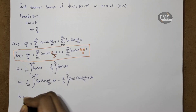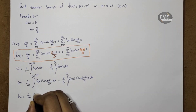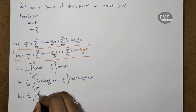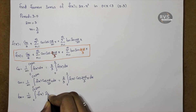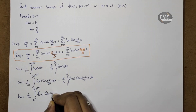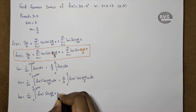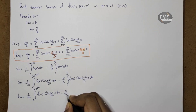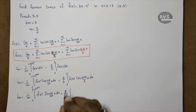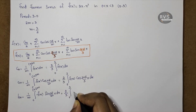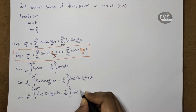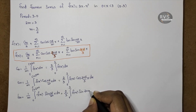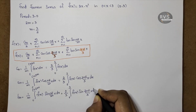The formula for bn is: bn is equal to 1 by m into integral from c to c plus 2m of F of x into sin n pi by mx dx. With m equal to 3 by 2, the reciprocal is 2 by 3, giving the integral from 0 to 3 of F of x into sin 2n pi by 3x dx.